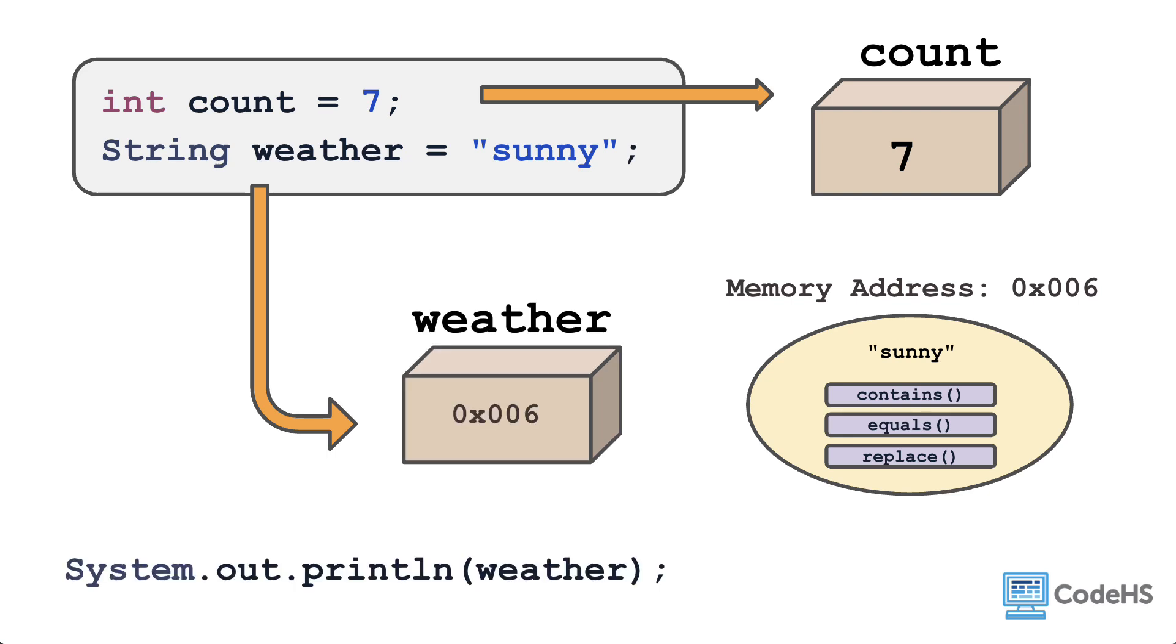Then, every time you use or access the string variable, it knows where the actual object is and points right to it. As a user or programmer, you don't necessarily see this happening. You would just see the string sunny being printed.